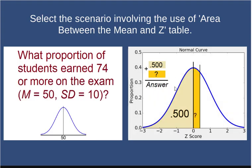Just to clarify, we have two different z-tables: area between the mean and z—that's this area here—or the area beyond z.